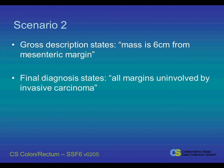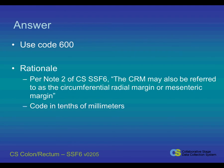This example has the distance from the mesenteric margin listed in the gross description, but not in the final diagnosis. Site-Specific Factor 6 should be coded to 600, reflecting the numbering convention to code in tenths of millimeters. Even though this is from the gross description, you should code the CRM from any source on the pathology report, including the gross description.